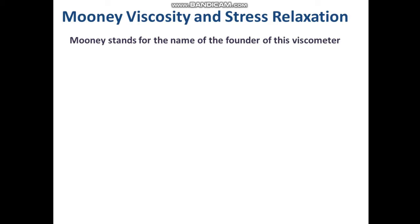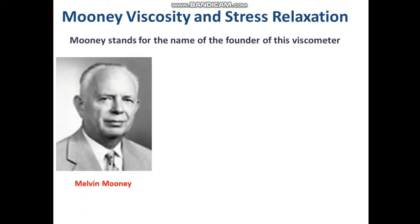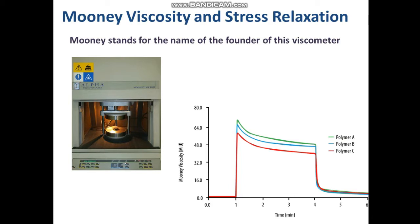Before going to the practical and taking hands-on experience on determining Mooney viscosity and stress relaxation of natural rubber samples, discussing some aspects or theories regarding Mooney viscosity and stress relaxation is worthwhile. The term Mooney stands for the name of the founder of this viscometer, so as a respect for him the viscosity of natural rubber is measured in Mooney units. Here you can see the Mooney viscometer available in our laboratory — that is the Mooney MV2000 series, manufactured by Alpha Technologies.